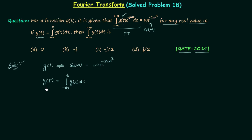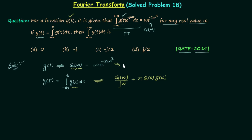We are getting signal y(t) by integrating signal g(t). From the integration-in-time property of the Fourier transform, when we integrate a signal the resultant Fourier transform equals the initial Fourier transform G(ω) divided by jω, plus π·G(0)·δ(ω), where G(0) is the value of G(ω) when ω equals zero. We can easily calculate G(0): when ω=0, G(0) equals zero, so that entire term becomes zero.